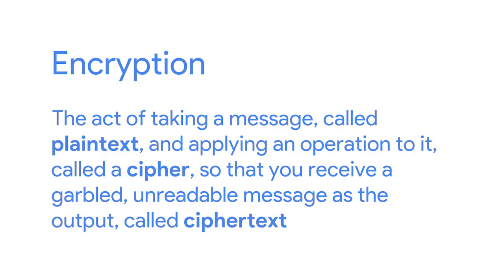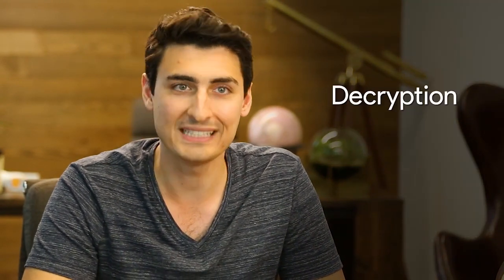Encryption is the act of taking a message, called plaintext, and applying an operation to it, called a cipher, so that you receive a garbled, unreadable message as the output, called ciphertext. The reverse process — taking the garbled output and transforming it back into readable plaintext — is called decryption.